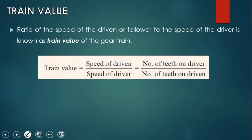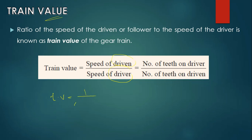Train value is the ratio of speed of driven to the speed of driver, or in other words, it is the reciprocal of the speed ratio. Train value equals 1 divided by speed ratio. So: speed of driven divided by speed of driver equals number of teeth on driver divided by number of teeth on driven — both are inverse.